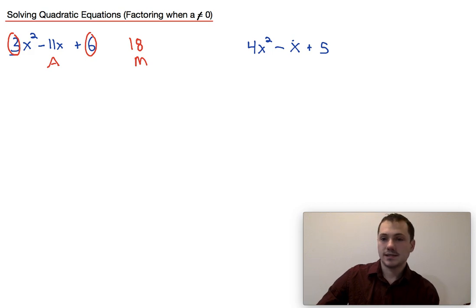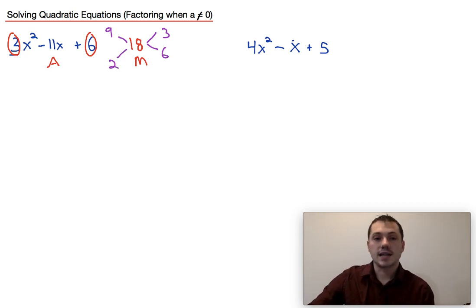So 18, if we start thinking about its factors, we could start with maybe 6 and 3. If I have 6 and 3, that's not going to add to 11, so I go on to another one and maybe I try 9 and 2. Well we do find that 9 times 2 is in fact going to add to 11, and if it's negative 9 and negative 2, it will add to negative 11. Alright, so that's step 1 and step 2.